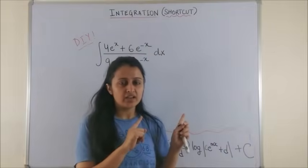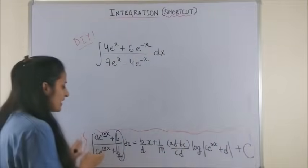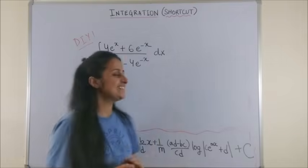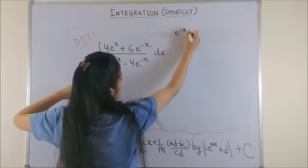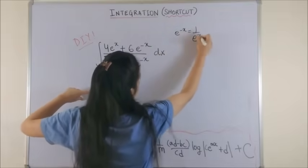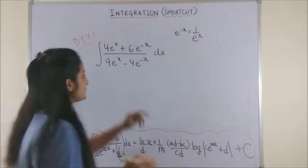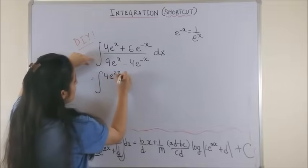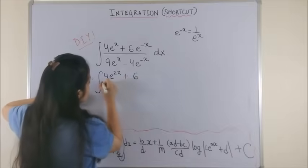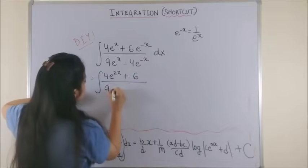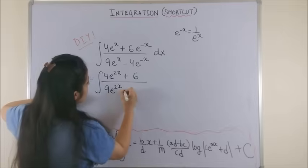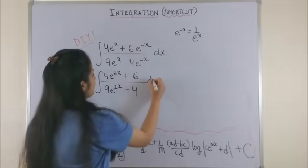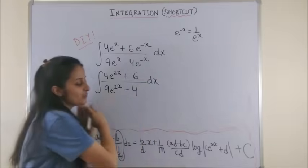Oh my god! This DIY doesn't match with the format you gave me. Can I bring it to that form? Let's see that. This e to the power minus x is basically 1 upon e to the power x. So all you need to do is take the LCM. This becomes 4 into e to the power 2x plus 6 and this would become 9 into e to the power 2x minus 4. E to the power x in the numerator and the denominator gets cancelled and this is the integral which matches